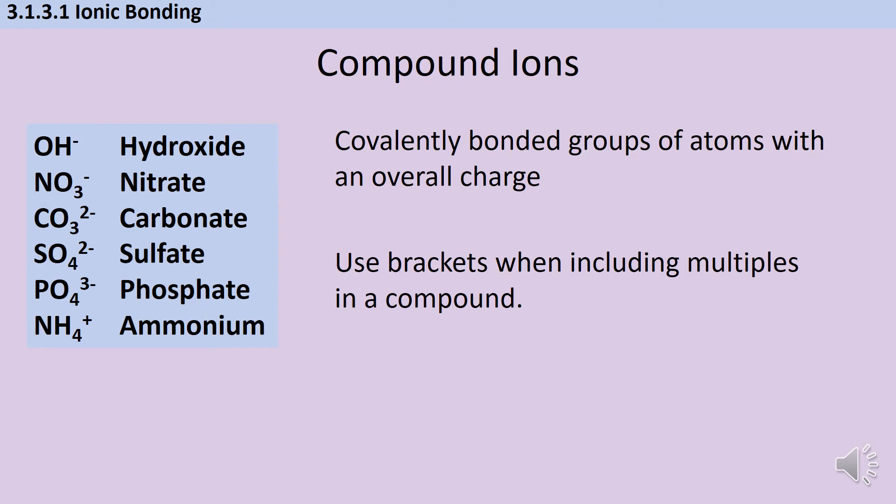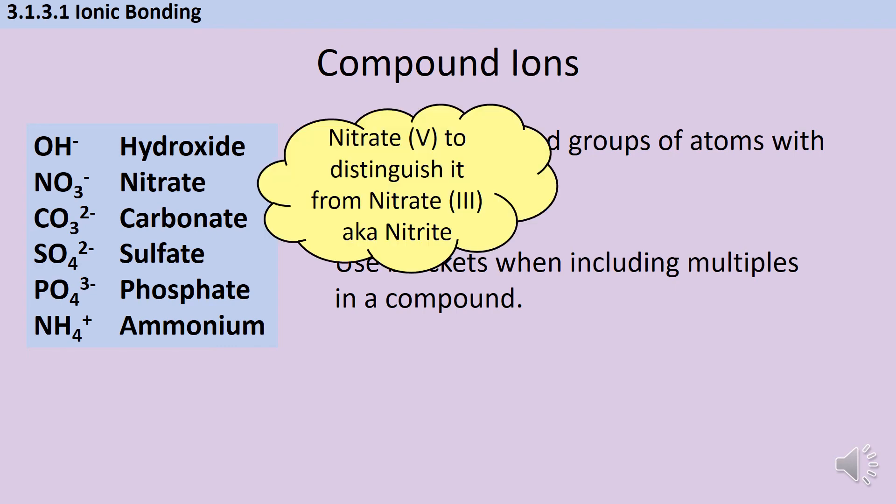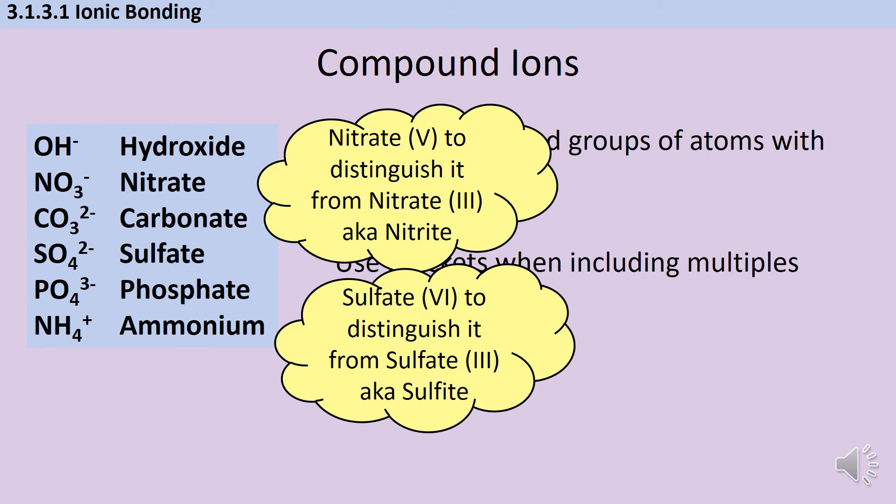You're also expected to know the formula of compound ions. Compound ions are covalently bonded groups of atoms with an overall charge. If they're in an ionic compound and you need more than one, use brackets to indicate the whole ion has been included multiple times. The ones to know: hydroxide ions with single minus charge, nitrate ions with single minus charge (sometimes called nitrate(V) to distinguish from nitrate(III) or nitrite), carbonate ions with 2- charge, sulfate ions with 2- charge (sometimes sulfate(VI) to distinguish from sulfate(IV) or sulfite), and phosphate ions and ammonium ions.